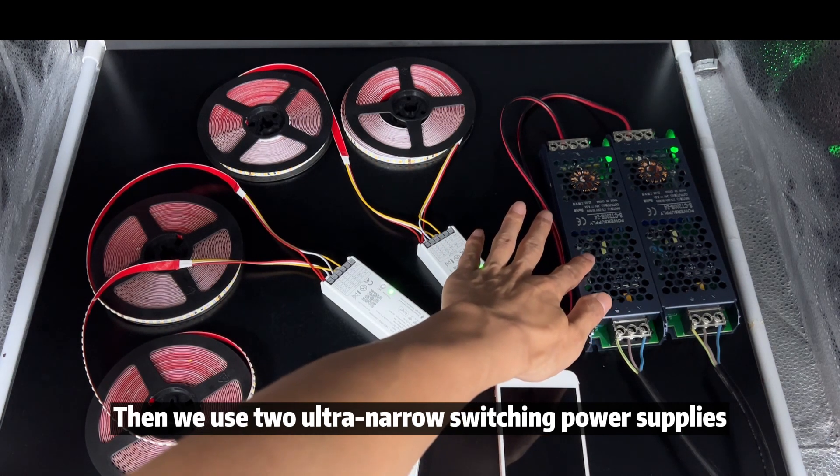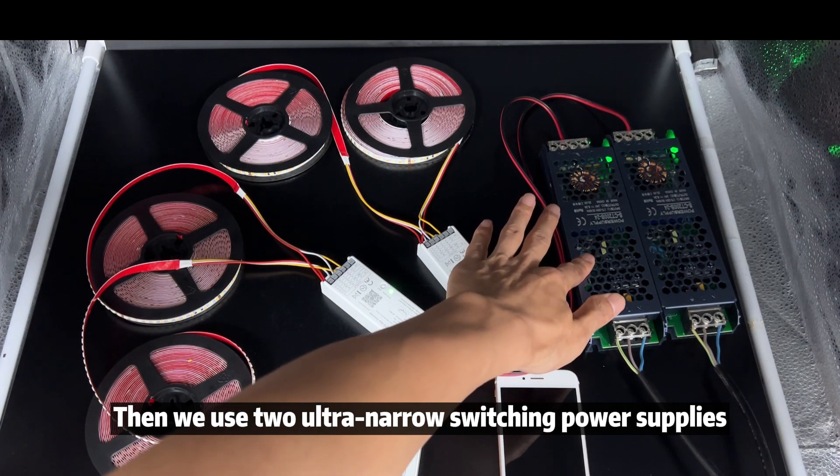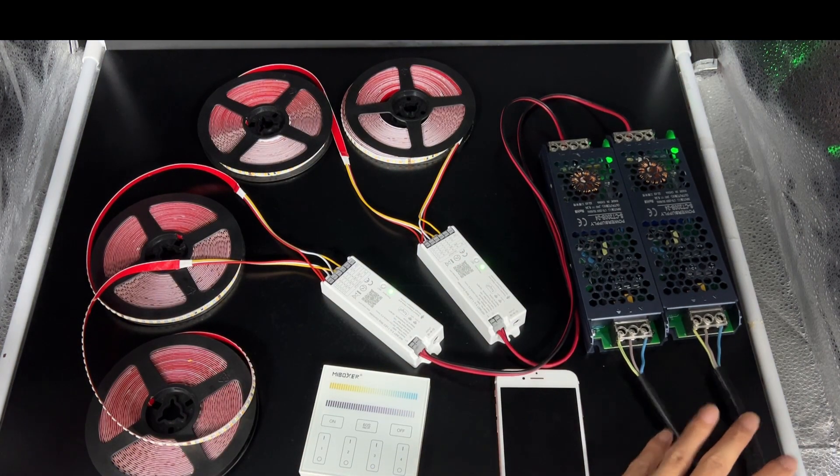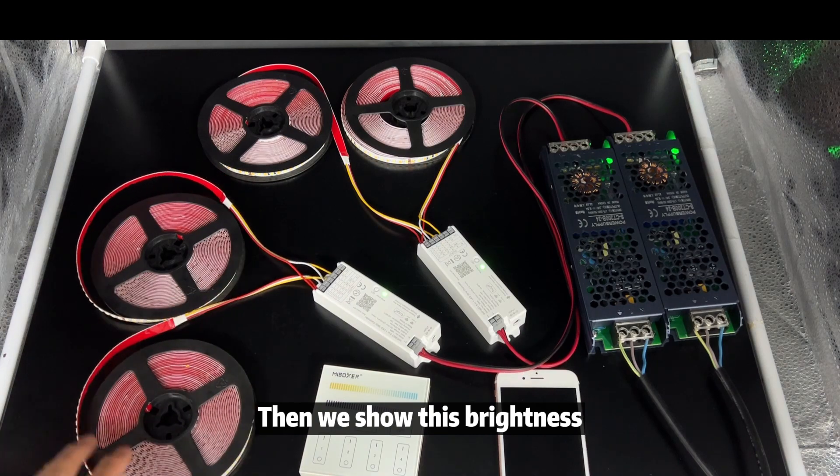Then we use 2 ultra-narrow switching power supplies. Each power supply is 200W, 24V. AC 110V or AC 220V input. Then we show this brightness and how to connect.